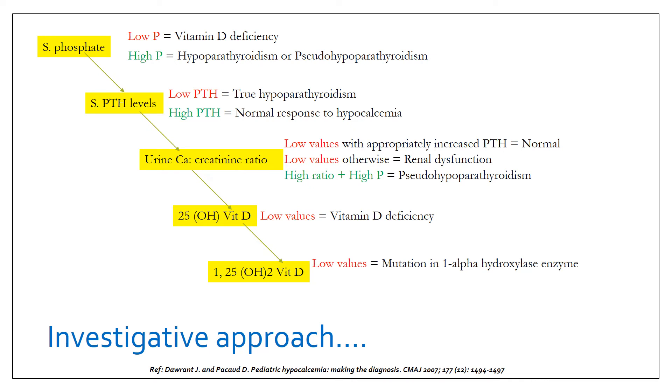If 1,25-dihydroxy vitamin D is low, then it suggests a mutation in 1-alpha hydroxylase enzyme, that is a genetic cause. And if it is high, then again it suggests a likely genetic cause, which is end organ resistance to vitamin D.